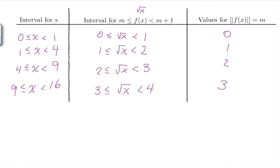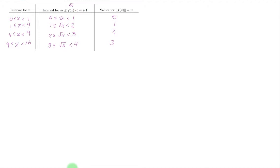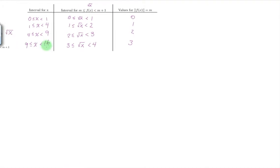So our integral will look like this. It's gonna be the integral from 0 to 1 of the square root of x plus from 1 to 4 square root of x, from 4 to 9, and from 9 to 16.